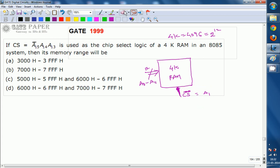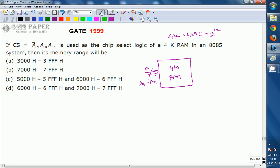Chip select is A15 bar A14 and A13. So this is the chip select which is CS. CS is given as A15 bar A14 and A13. Complete address range is going to be specified with 16 bits because 8085 has 16 address lines.